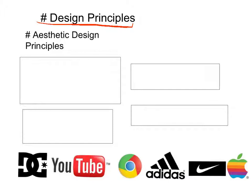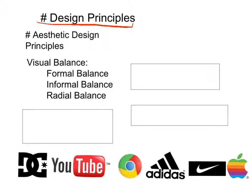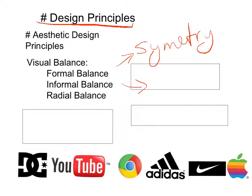Let's start by talking about visual balance. There are three different types of visual balance: formal balance, informal balance, and radial balance. Formal balance is kind of similar, but not exactly the same as symmetry. Informal balance is roughly equal to, but not exactly the same as asymmetry — meaning not symmetrical, the opposite of symmetrical.